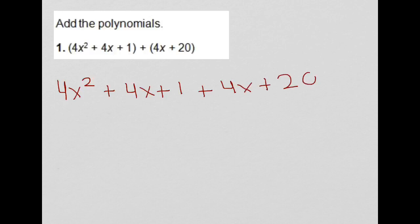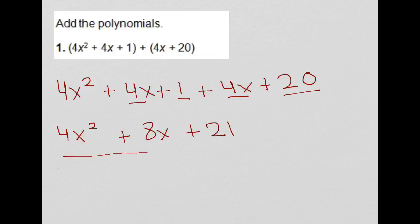So now we need to combine like terms. When we add 4x and 4x, we'll get 4x squared plus 8x. 1 and 20 will give us 21. So this is going to be our final answer.